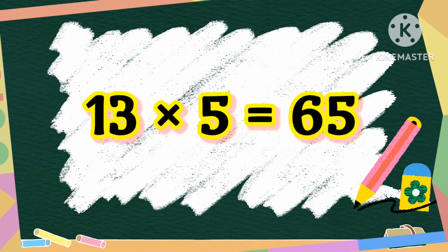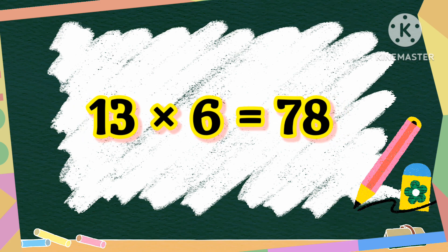13 fives are 65. 13 fives are 65. 13 sixes are 78. 13 sixes are 78.